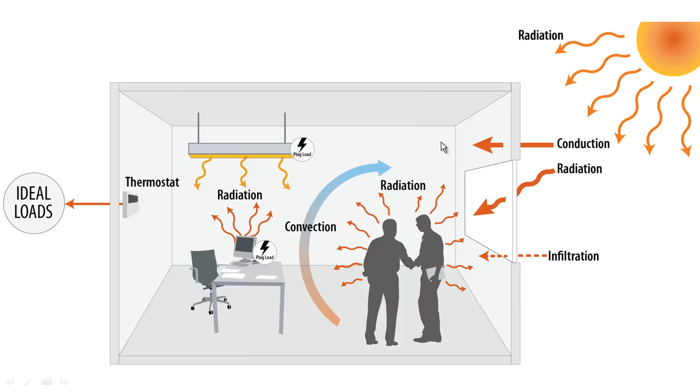We also have infiltration that occurs possibly at an intersection like a window to wall or just right through the wall itself. And then we have radiation through translucent surfaces.